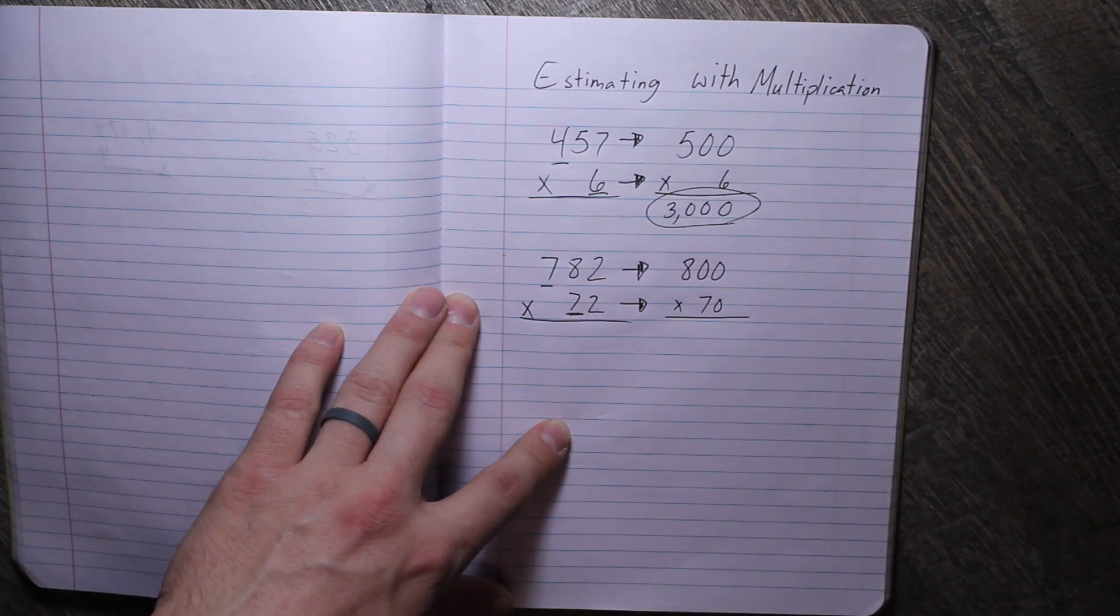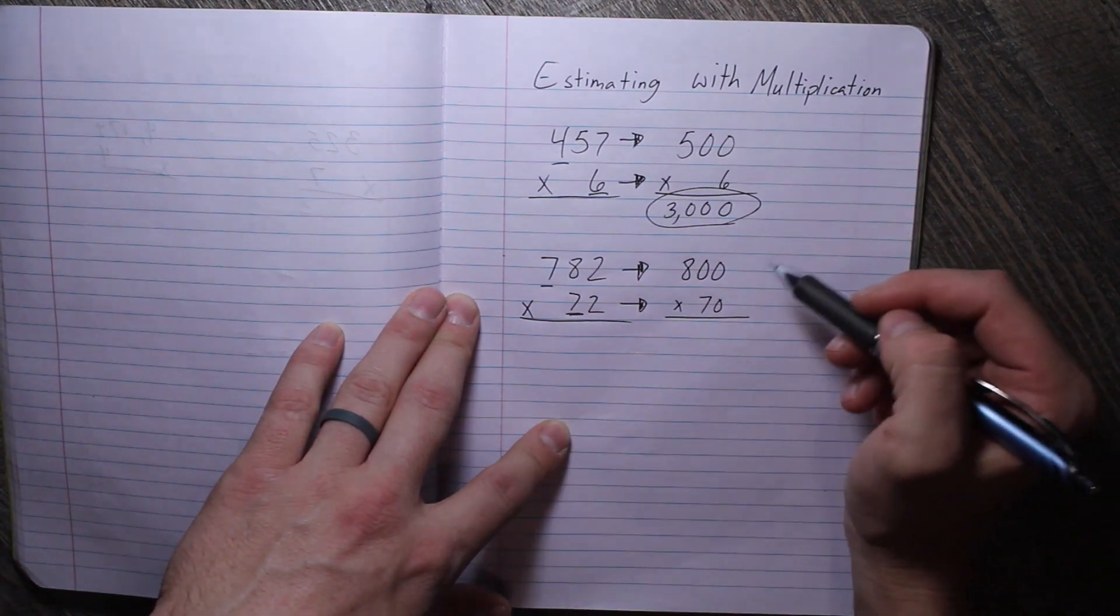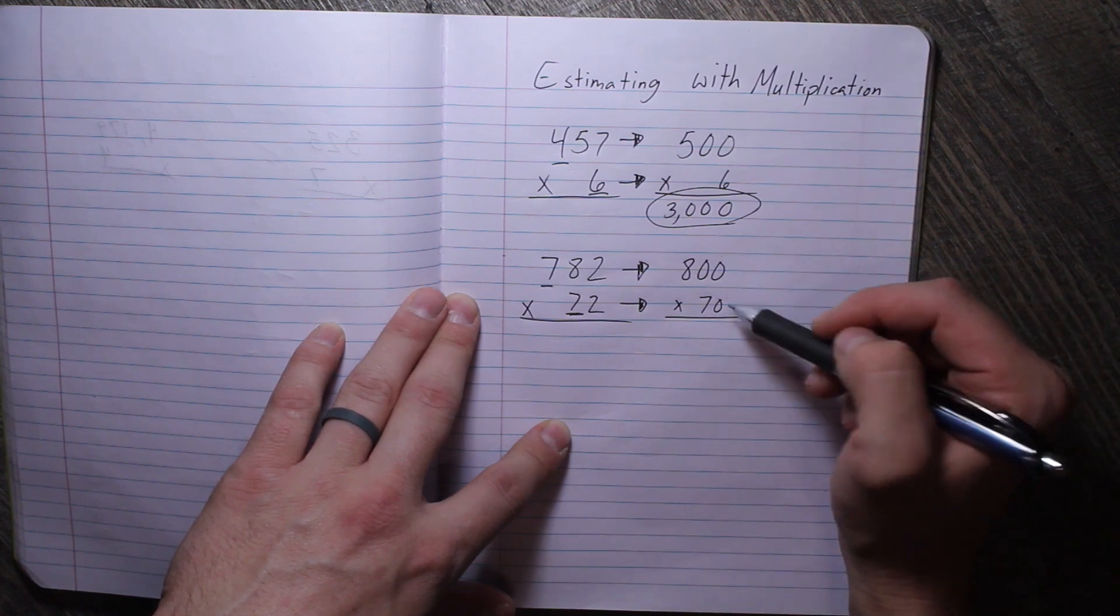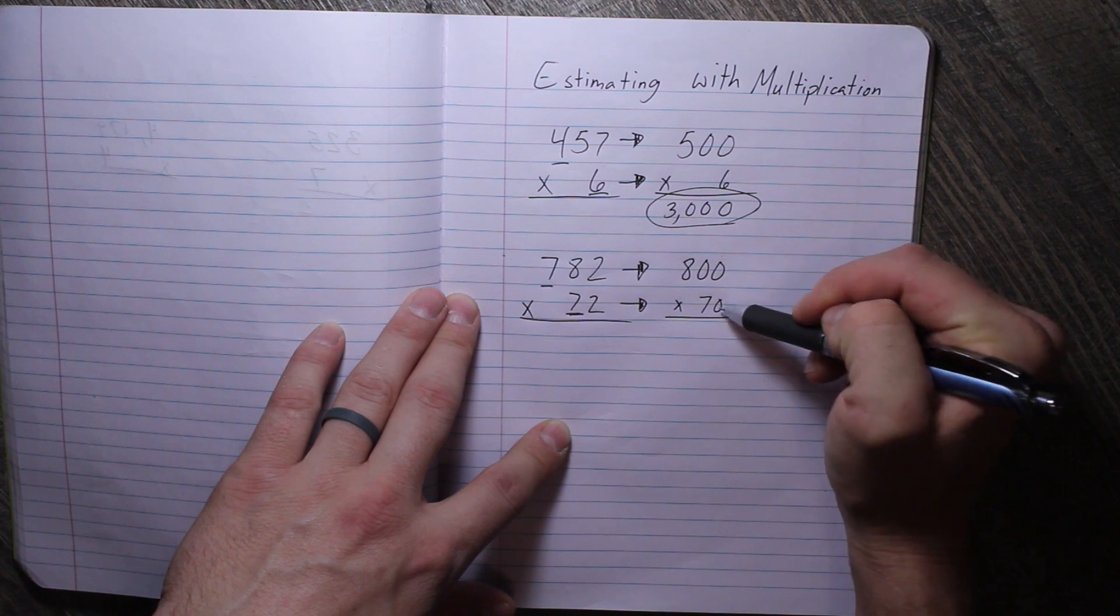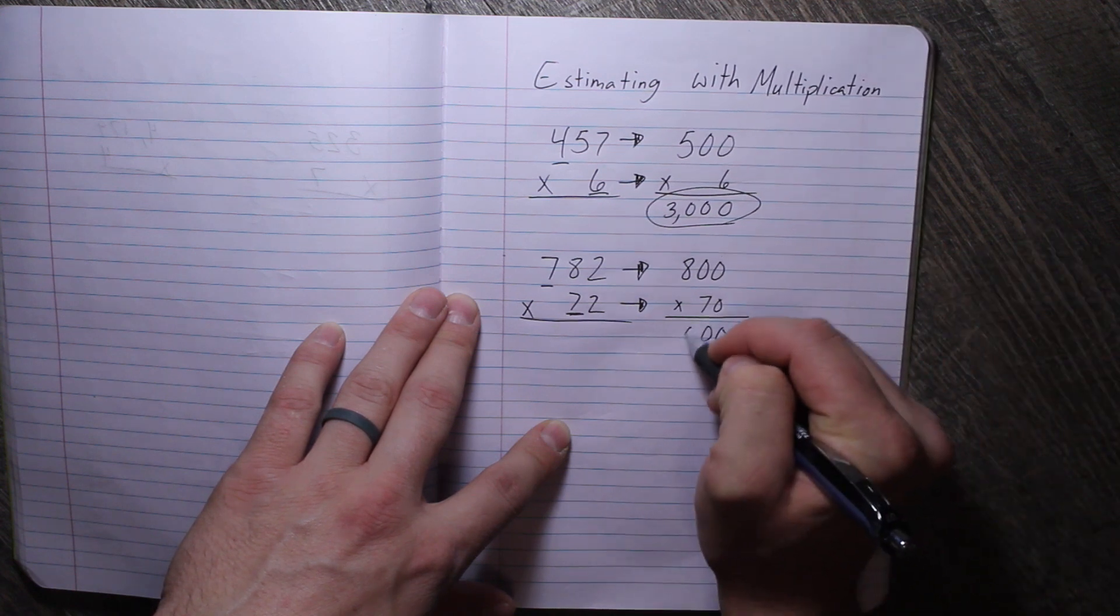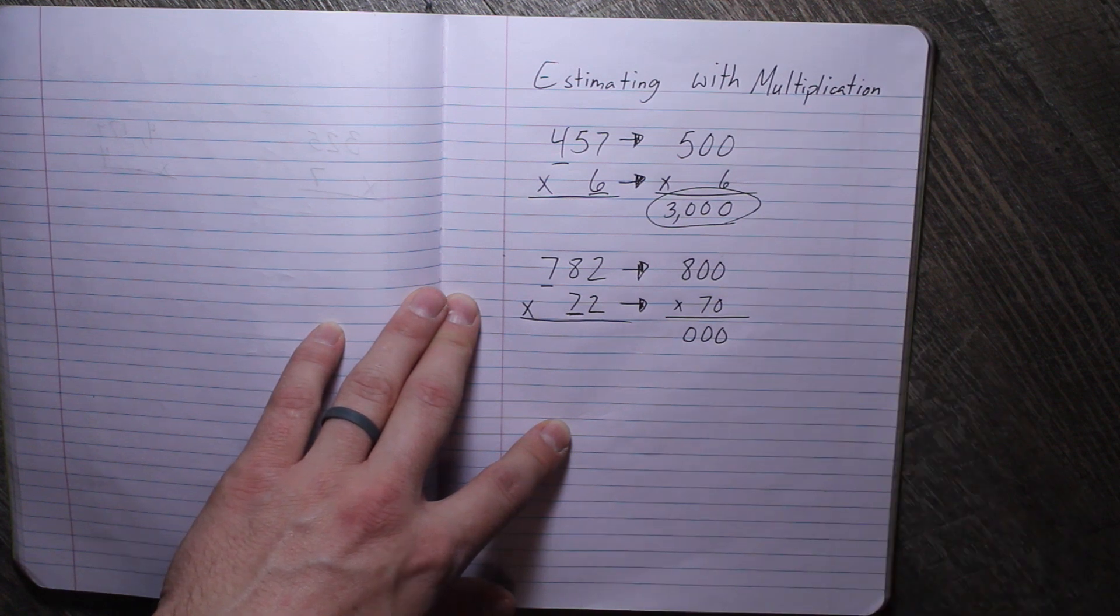And now we can multiply. Now this is where it gets interesting. How many digits, how many digits are zero in our factors? We have one, two, three. So we're going to have three zeros in our product.